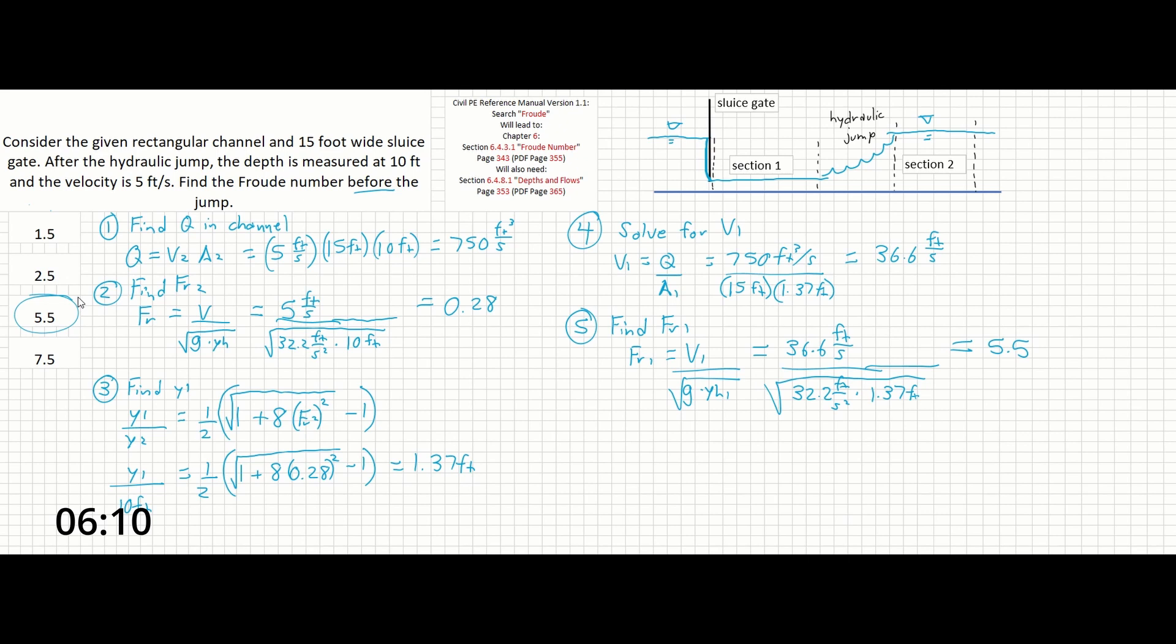Keep in mind that this question could have also asked you to solve for a Froude number in section 2 instead and given you the values you needed from section 1. For that reason, it's probably worth reviewing the other equations on page 353 just to see some of the other ways that they could have expressed this and things that you could have solved for instead. And that's it.